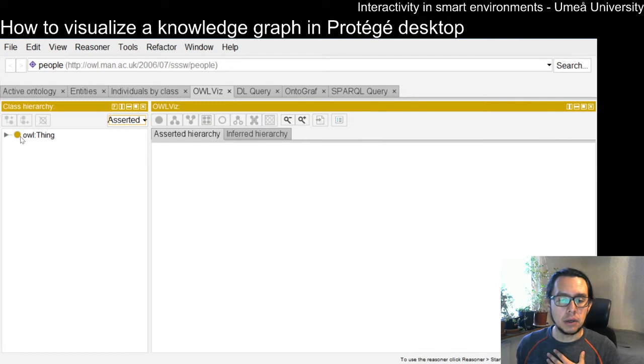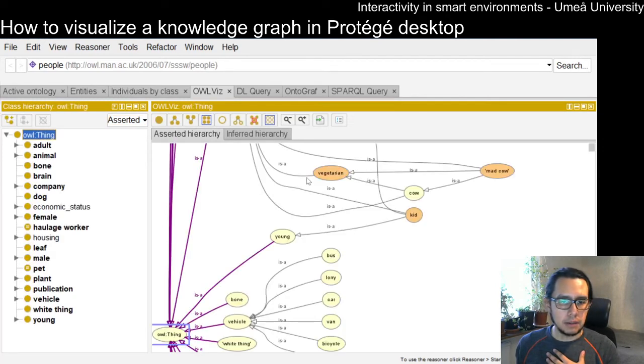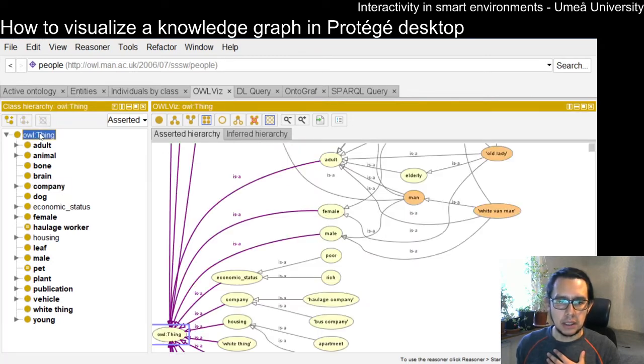How to set up OWLViz. Then you select only the entity and pieces of the entity and you're going to see this visualization. OWLViz is good to display the taxonomy. However,